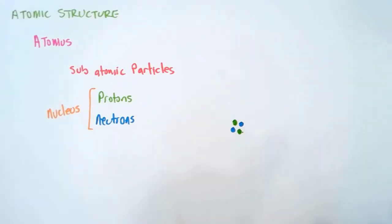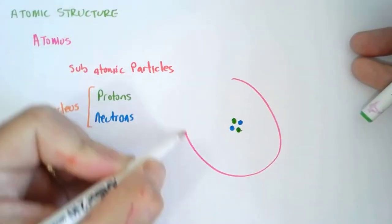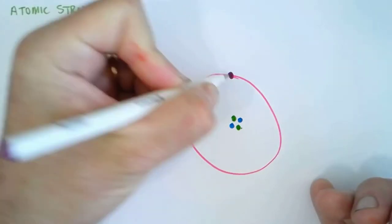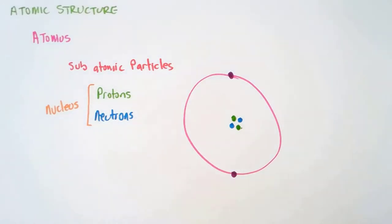Now orbiting the nucleus in a cloud or shell, we have electrons. The electrons move around the outside of the nucleus in an electron cloud or electron shell. We can never say exactly where the electrons are, but they're in a cloud or shell around the outside of the nucleus.